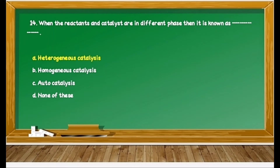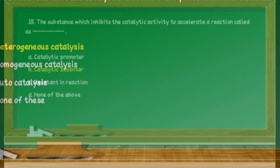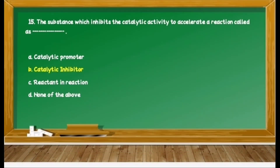Question 34 is again on classification of catalysts. This question is similar to question 33 but with a little change: when the reactants and catalyst are present in different phases — different phase means heterogeneous. Therefore, option A, heterogeneous catalysis, is correct.